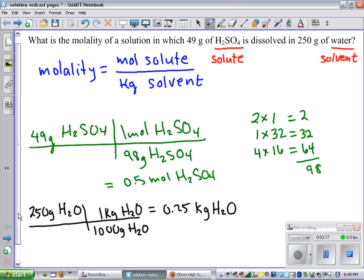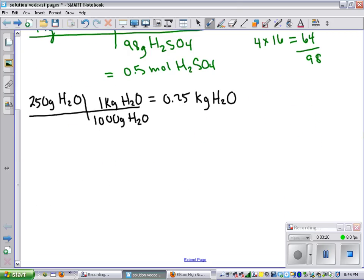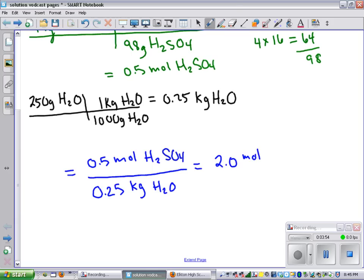Now to put that in our formula to find molality, we get 0.5 moles of sulfuric acid divided by 0.25 kilograms of water, which equals 2 moles per kilogram of molality.